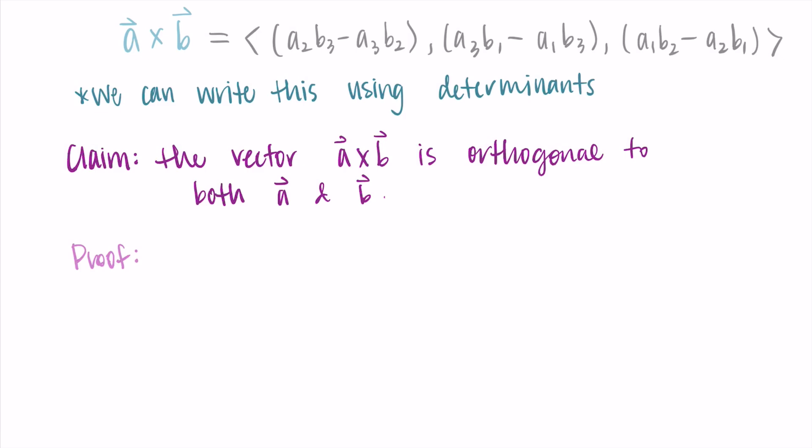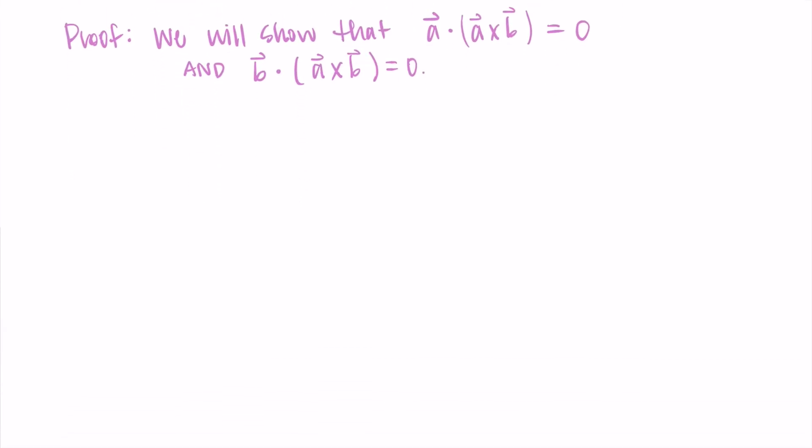Specifically what I'm going to do is I'm going to take my vector and dot it with this new cross product. When we take the dot product of two vectors, it should be equal to zero if they are orthogonal or perpendicular. I'm really actually going to only do one of these because it just looks exactly the same to do the second one, and I'm going to leave that up to you to do if you'd like. But I'll show you the A dot A cross B computation.